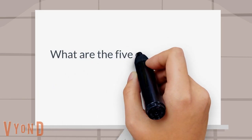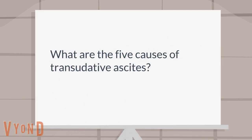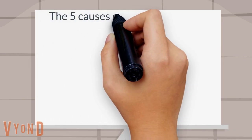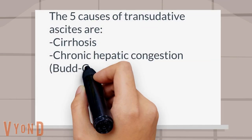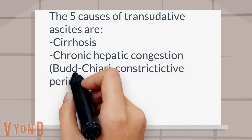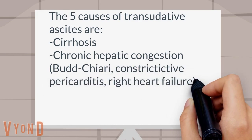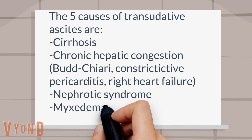What are the five causes of transudative ascites? The five causes of transudative ascites are cirrhosis, chronic hepatic congestion Budd-Chiari, constrictive pericarditis, right heart failure, nephrotic syndrome, myxedema, and MIGS syndrome.